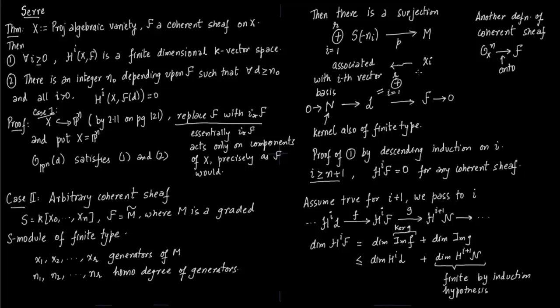The sheaf L is associated with the graded ring S(-ni), i equals 1 to r. When you pass to sheaves this looks like OP^n(-ni). Hartshorne does a much better job by directly associating this with OP^n(-ni). Dimension of H^i(L) is finite because it is of the form OP^n(-ni) direct sums. We have proven part 1 of the theorem: H^i(X,F) is a finite dimensional space.